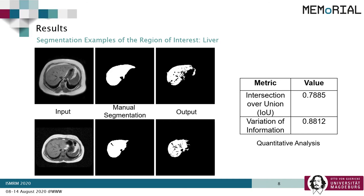Here, only the cluster predicting the liver has been shown. It can be observed qualitatively that the model was able to segment fairly well without any manual labeling, though some over-segmentation can be observed. It can also be observed that small vessels not segmented by the manual rater were segmented correctly by the network. Quantitatively, the results yielded approximately 0.79 intersection over union and 0.88 variation of information compared against the manual segmentation.